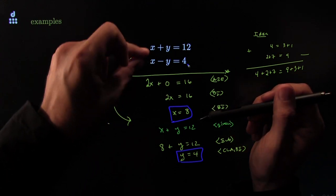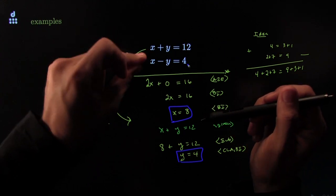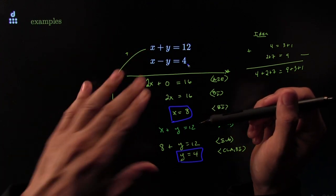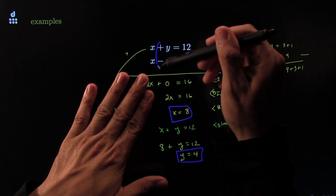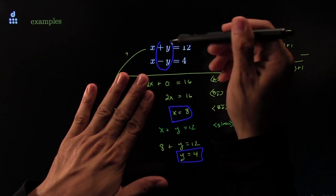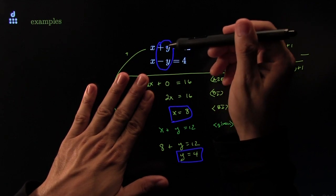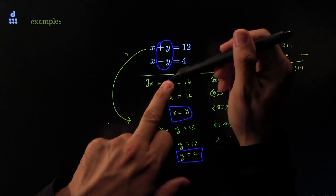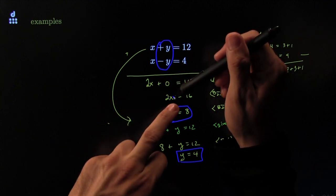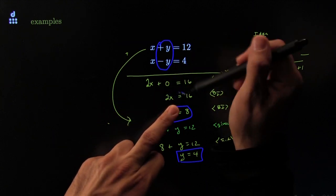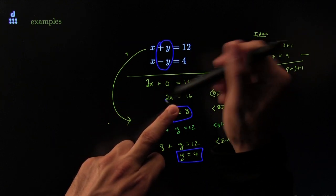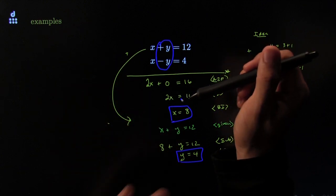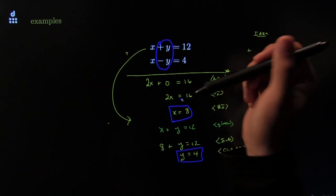The key here was adding the two equations. The other key was that we were lucky these guys matched — when you add positive y and negative y, the y's are gone. That leaves us with one equation with one variable. That's the sweet spot: one equation, one variable — that's where you want to get to.